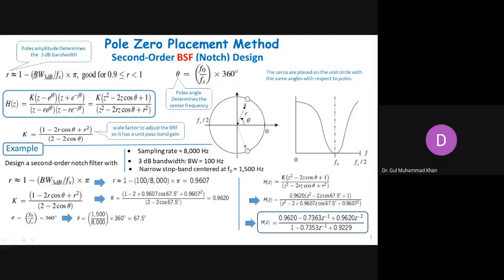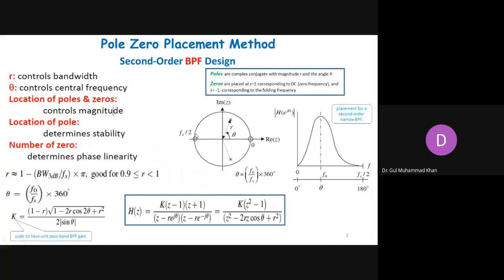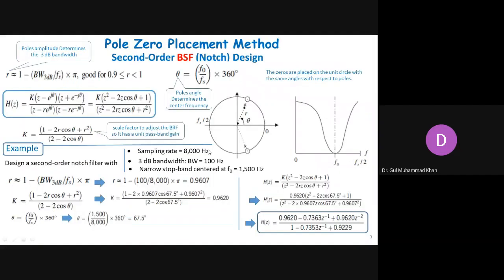Again, for the band stop filter, R can be calculated using this value, 1 minus bandwidth, 3 dB bandwidth divided by Fs into pi. You can also calculate the value of theta using the similar formula. And in this case, the zeros play an important role in case of band stop filter, because zeros are the points which stop the response. Poles are the points which facilitate the response. So if you are going for a band pass filter, you just place the zeros at the extreme points and you can place the poles anywhere, depending on the value of R and theta. But if you are designing a band stop filter, then both R and theta values are important in the overall expression. Once you calculate the value of theta, you substitute value here, and once you calculate the value of R, you can substitute here.